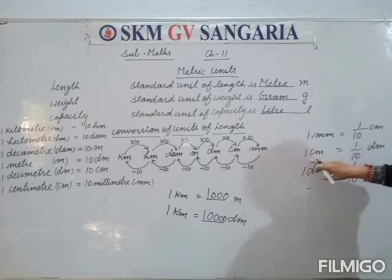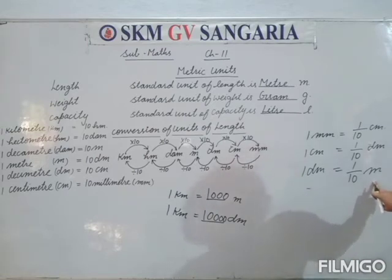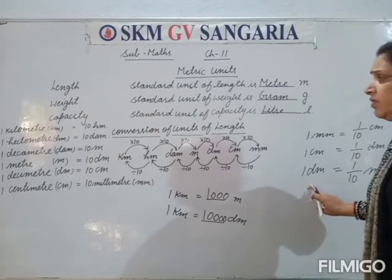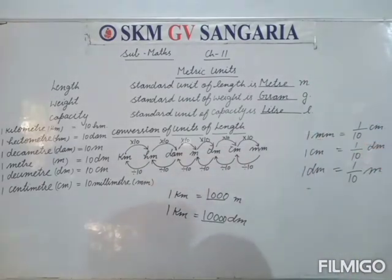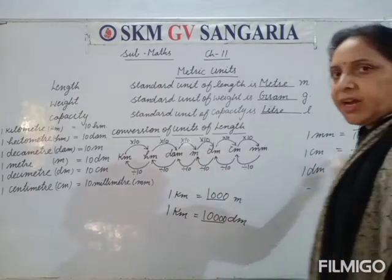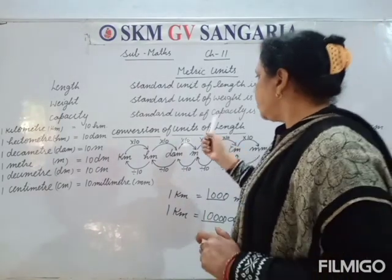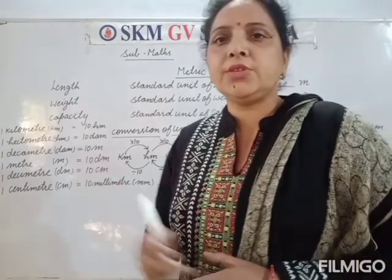Continuing: 1 meter = 1/10 decameter, 1 decameter = 1/10 hectometer, 1 hectometer = 1/10 kilometer. So when converting lower unit to higher unit, you divide by 10. This is your Chapter 11 unit of length. This is your homework. Thank you.